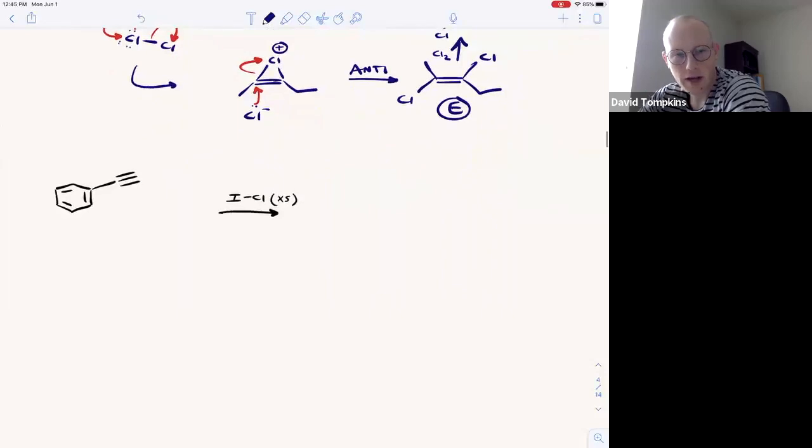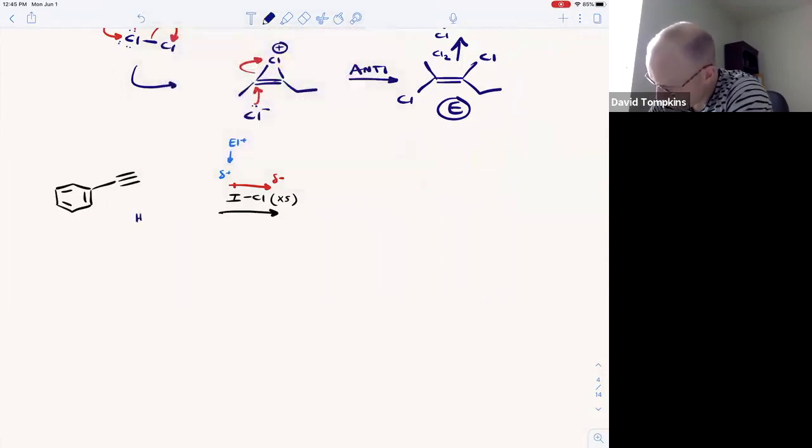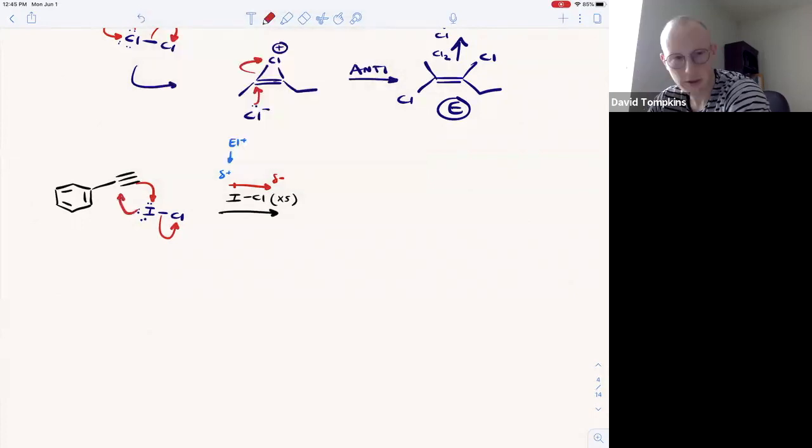So the final example here is using a mixed reagent where we have a polar iodine-chlorine bond. And therefore the chlorine is electron rich and the iodine is electron poor, or the iodine is the electrophile. So that electrophile is going to be attacked by the nucleophile or the alkyne. So the alkyne attacks the iodine, causing the iodine-chlorine bond to dissociate. And the iodine is a large atom with lone pairs, and therefore it can attack back to make the bridge intermediate.